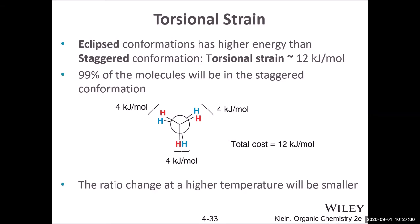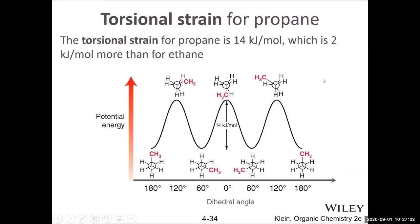With propane (three carbons), one carbon has a methyl group while the other two have only hydrogens. This causes a slight difference in energy. Whenever the methyl group eclipses the hydrogens on the adjacent carbon during rotation, we have high energy. The energy gap is a little larger because the methyl group is bigger, causing stronger repulsion with the neighboring hydrogen. The difference is not that large.